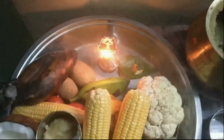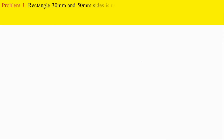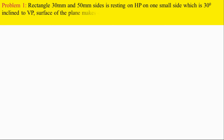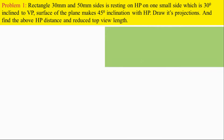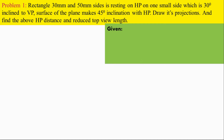Let's see the problem. A rectangular plane of size 30 mm and 50 mm side is resting on HP on one of the small sides, which is 30 degrees inclined to the VP, and the surface of the plane makes 45 degree inclination with HP. Draw its projections and find the above HP distance and reduced top view length.